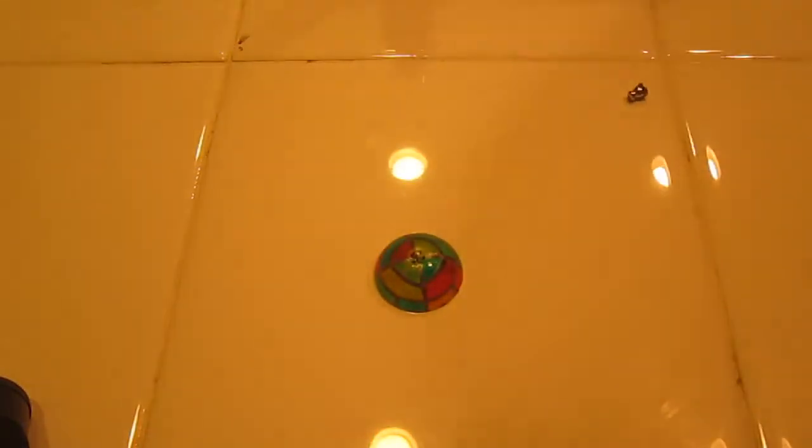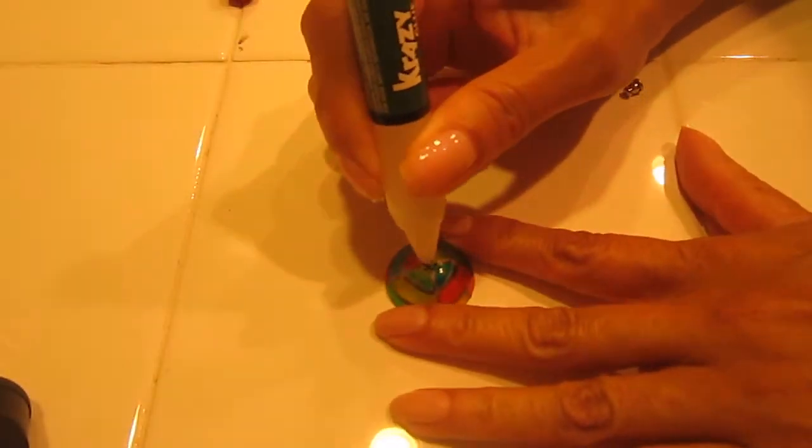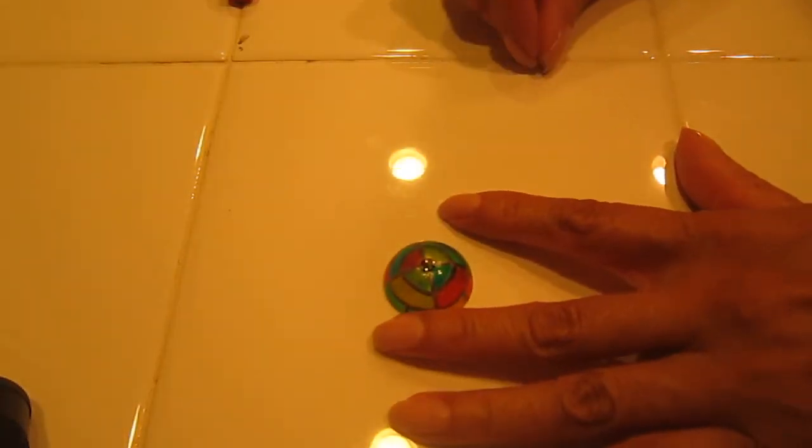This is the back of an old earring. With crazy glue, I am going to attach it to the top of the lampshade. And then just let it sit and dry.